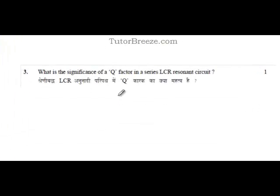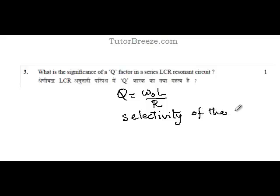The quality factor Q is given by omega naught L by R. It is an indicator of the selectivity of the circuit because if the quality factor is higher, that means the current at resonance will be more.